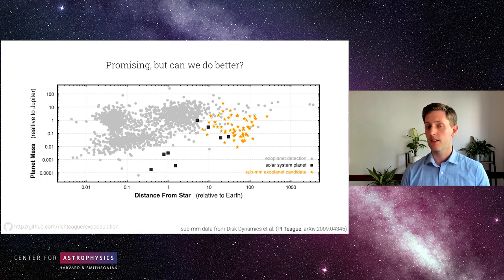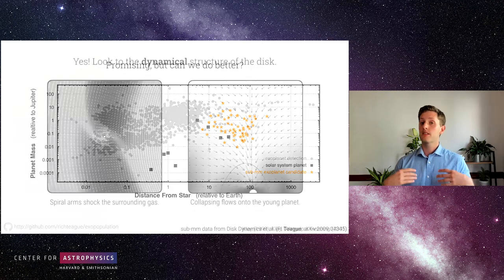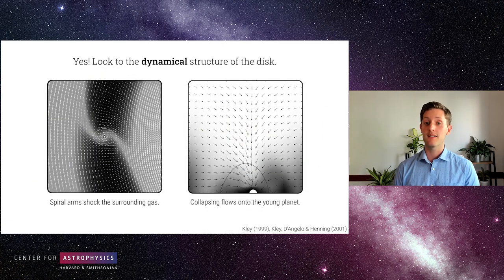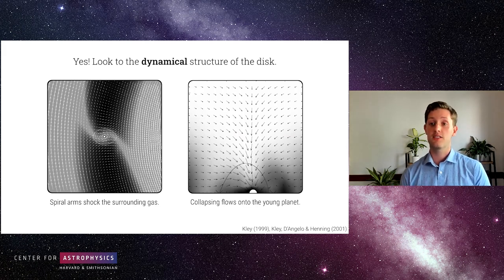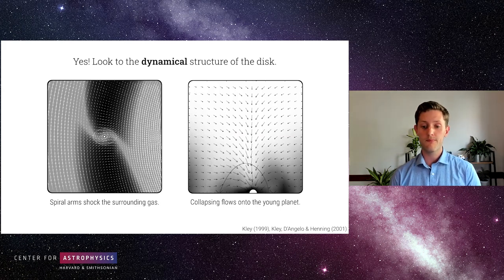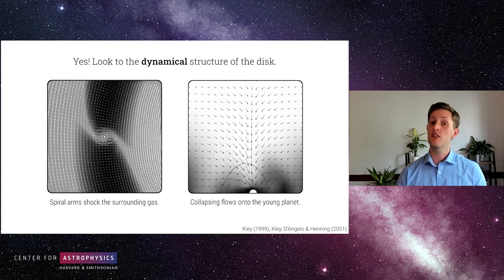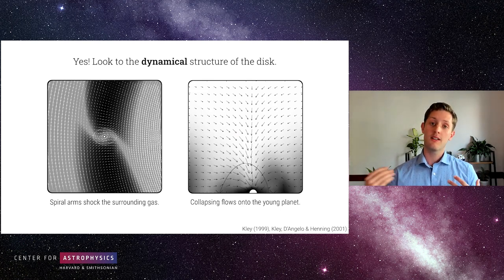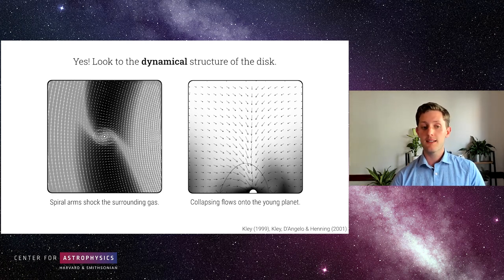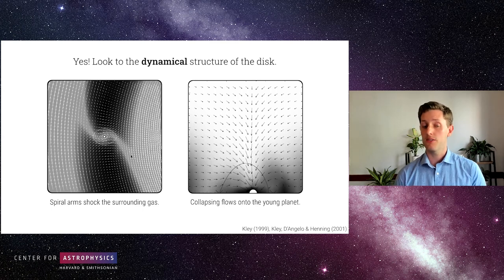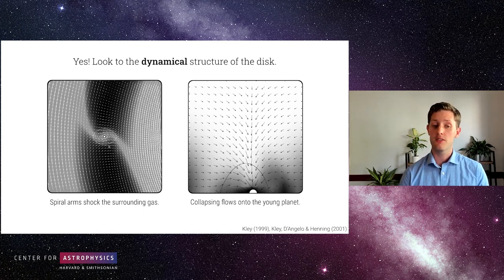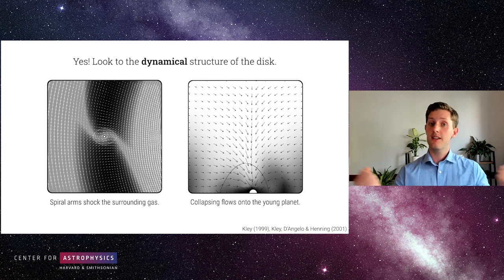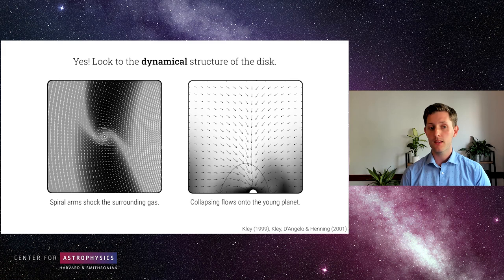How do we do a bit better than just looking at the continuum emission? The way I've been approaching this problem is to look at the dynamical structure of these disks. We know they're about 99% gas by mass, so we know the planets are also going to be causing very large disturbances in the gas, and those are things we can search for. We've known planets cause these perturbations as long as we've been running numerical simulations of planet-disk interactions. On the left, I'm showing some early work from Billy Clay running 2D simulations of a planet within a disk — the planet has opened up a large gap by launching spirals, with arrows showing the gas motions.